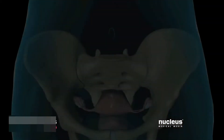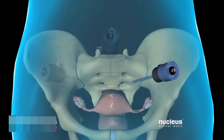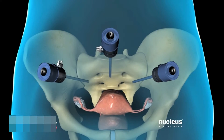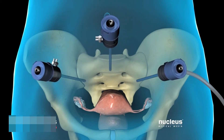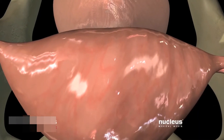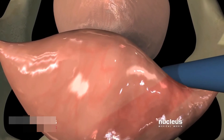For a laparoscopic-assisted vaginal hysterectomy, your surgeon will create several small incisions called ports in your abdomen. Carbon dioxide gas is then pumped through one of the ports to puff up your abdomen so its contents can be viewed more easily. Your surgeon will then insert a laparoscope through one of the ports, and images from its camera are projected onto a video monitor in the operating room.